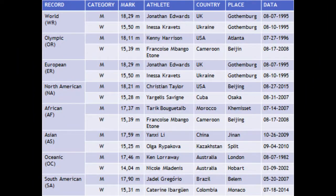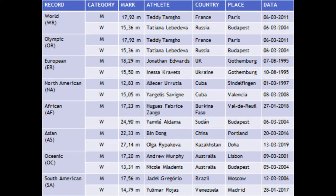In the triple jump, the landing with the rotary system is preferred. In this table we can see the records broken in triple jump. In world records, the British Jonathan Edwards achieved 18.29 meters in Gothenburg in 1995, and the Ukrainian Inesa Kravets managed 15.50 meters in the same competition. The Olympic records were set by the American Kenny Harrison in Atlanta 1996 with 18.11 meters, and Françoise Mbango Etone of Cameroon in Beijing 2008 achieving 15.39 meters. On indoor track, the French Teddy Tamgho made 17.92 meters in Paris in 2011 and Russian Tatyana Lebedeva achieved 15.36 meters in Budapest in 2004.